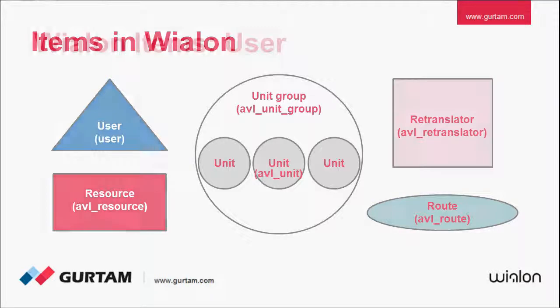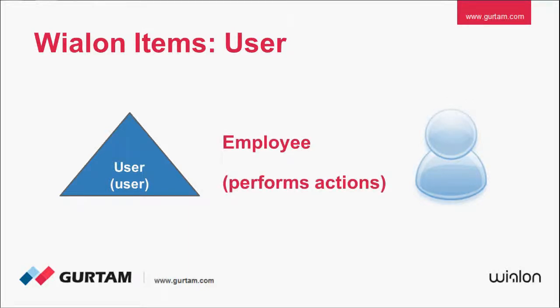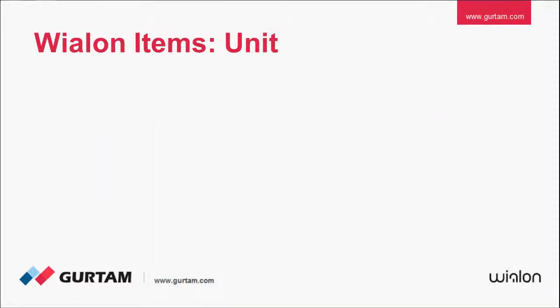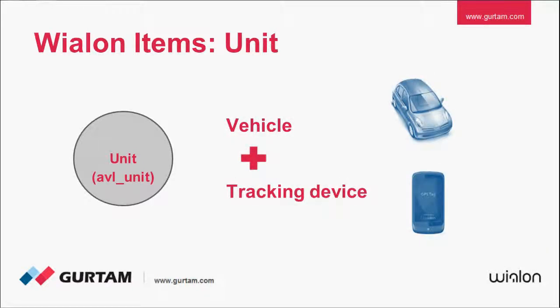User is an item that correlates with a person, an employee that will perform different actions in Wialon. Unit is an item that stands for each individual controlled thing together with a tracking device. This can be a commercial vehicle with a tracker, your pet with a pet tracker, or a refrigerator.